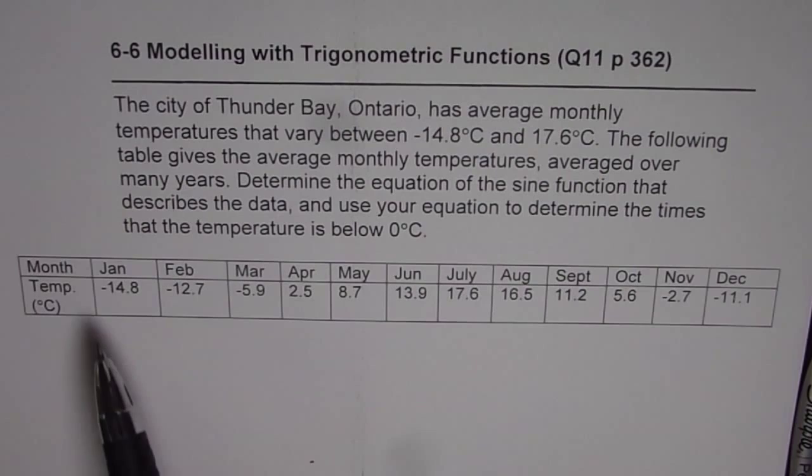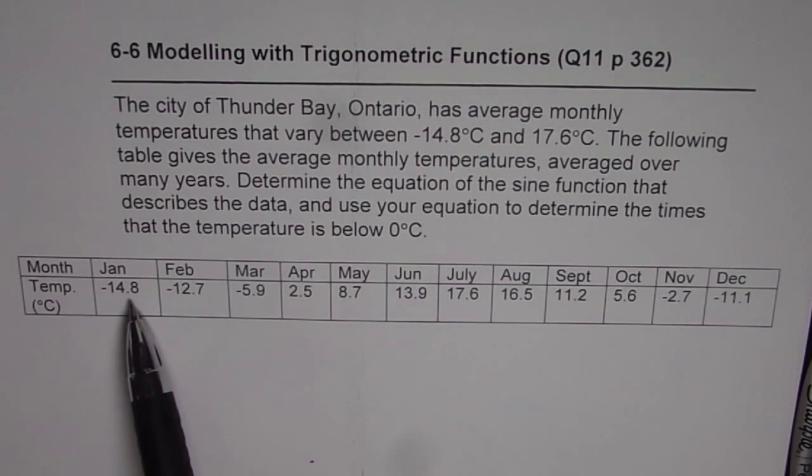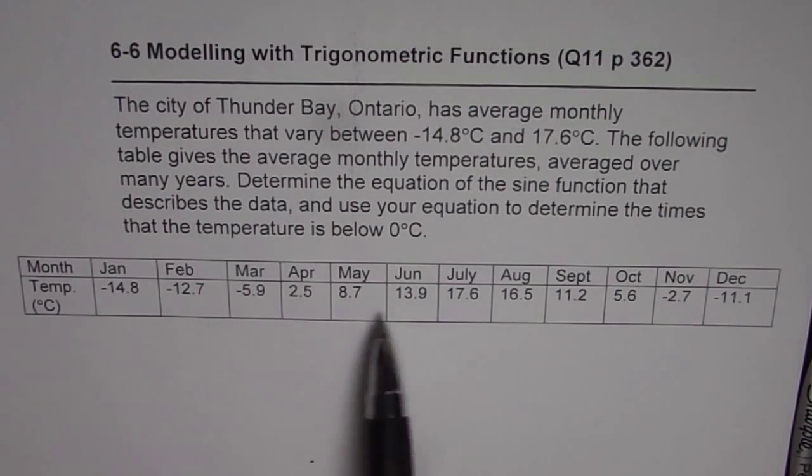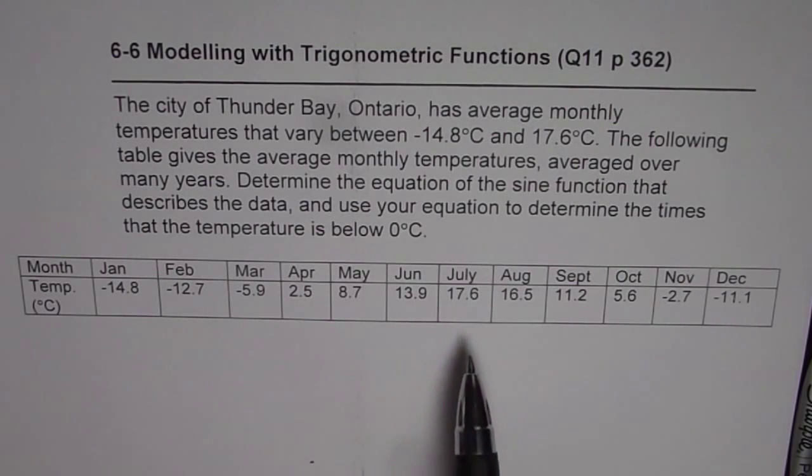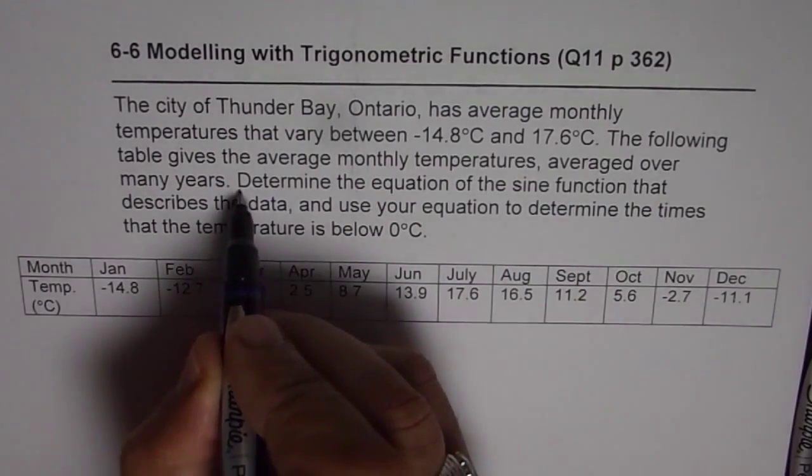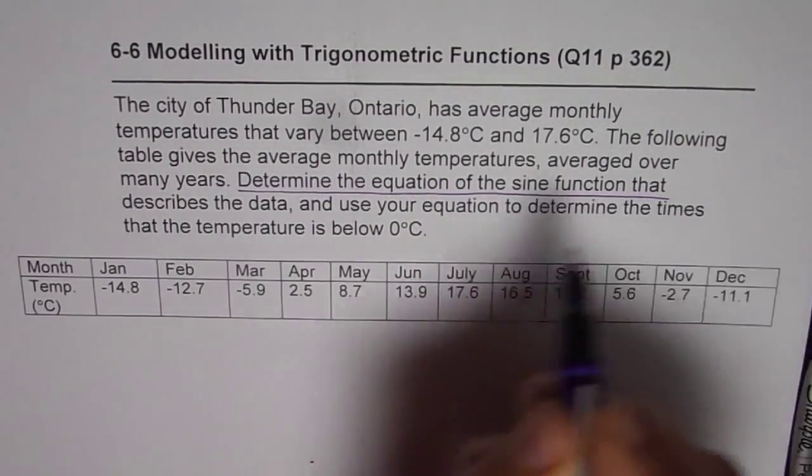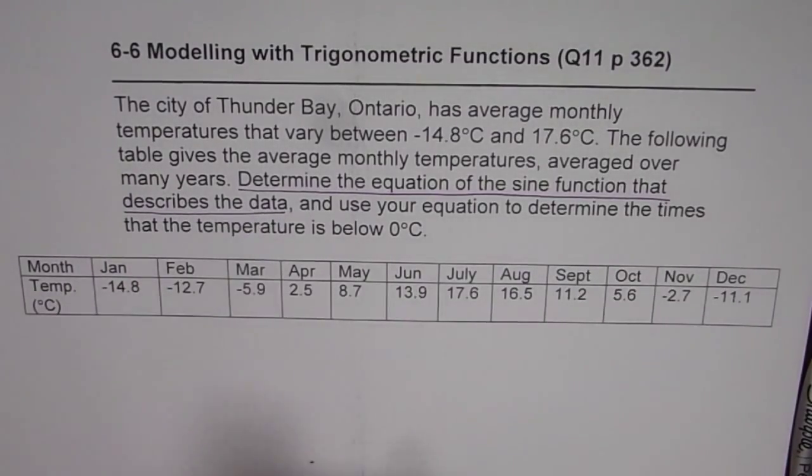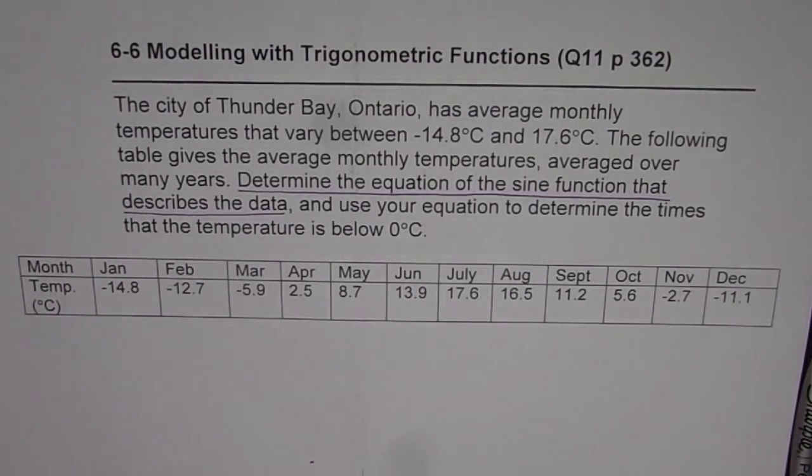data given to you from January to December. Temperatures were minimum of minus 14.8 to maximum of around 17.6 in July. Now, in part 1 of this video, we actually derived the formula to represent a sine function describing the data. So that part described the equation of the sine function that describes the data was done in part 1.